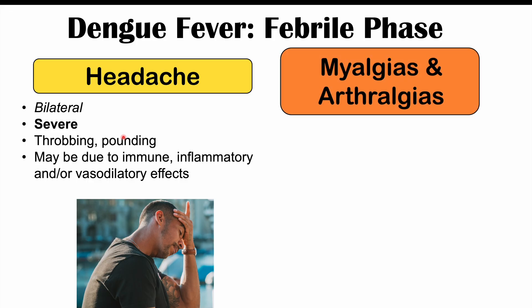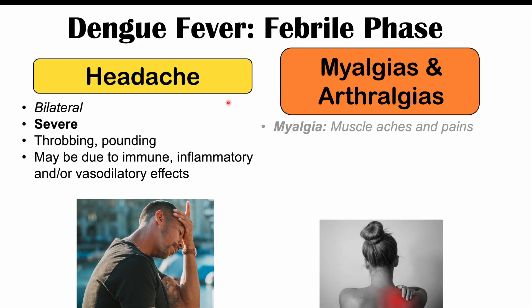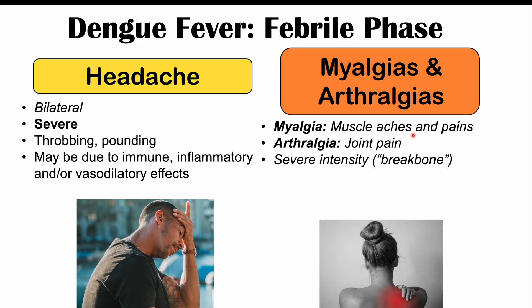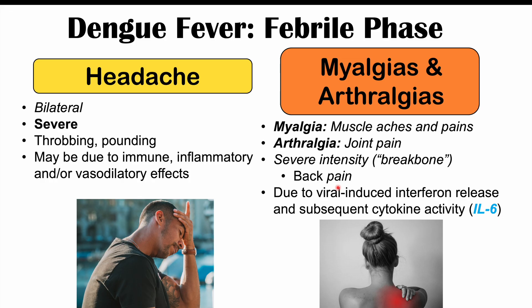Along with that, we can also have severe myalgias and arthralgias. Myalgias are muscle aches and pains; arthralgias are joint pain — and again, the intensity is severe. It can be described as break-bone intensity, so it's extremely painful. We can often see it in the back as severe back pain, and also in the extremities — the arms and legs can become very, very painful. This is due to viral-induced interferon release and subsequent cytokine activity, with interleukin-6 being the important causative factor.